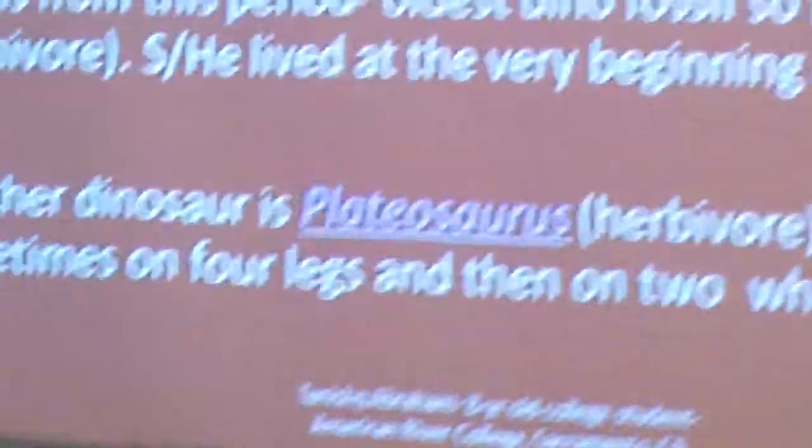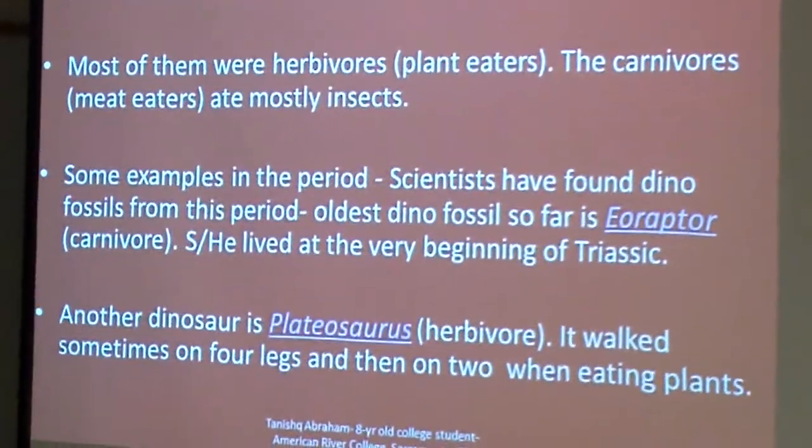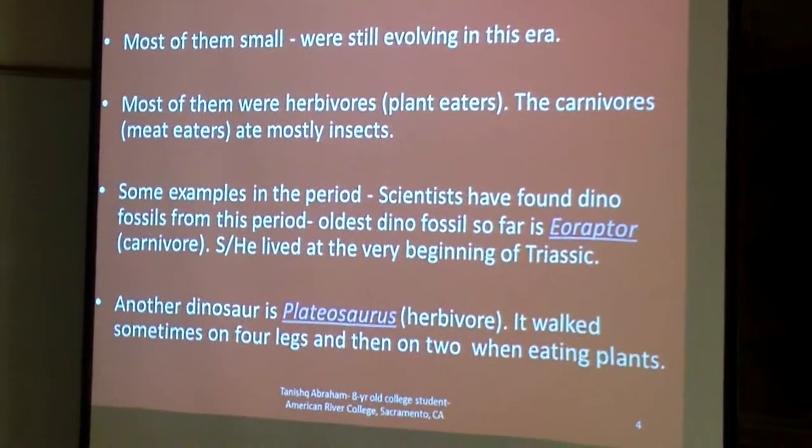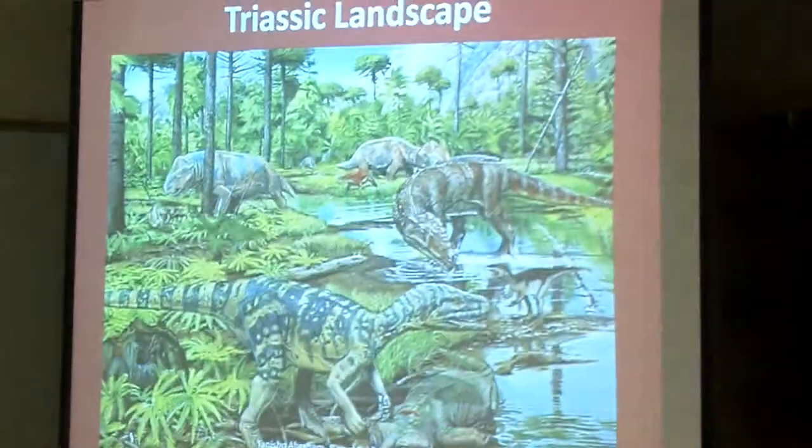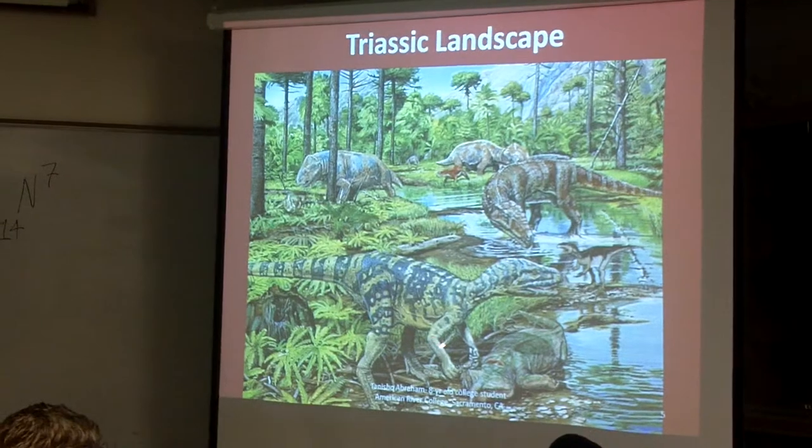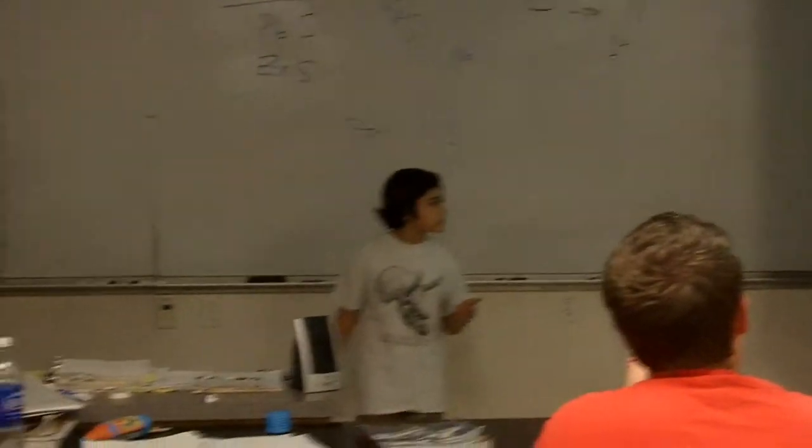So Eoraptor is so far the oldest dinosaur found. And another example of Triassic dinosaurs is Plateosaurus. The Plateosaurus is a herbivore or plant eater. It walks sometimes on four legs and sometimes on two legs, and it usually walks on two legs when it eats. So this is a Triassic landscape. This is the Eoraptor and that's the Plateosaurus. And this is a Coelophysis. Coelophysis dinosaurs are actually meat eaters.